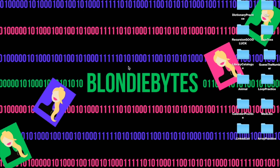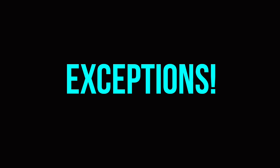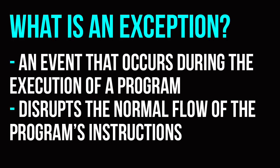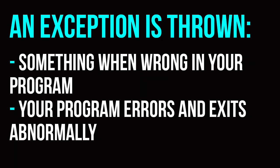Welcome to day 16. Today we are going to be talking about exceptions. Formally, an exception is an event which occurs during the execution of a program, and it disrupts the normal flow of the program's instructions. Basically, what that means is that something went wrong within your program.